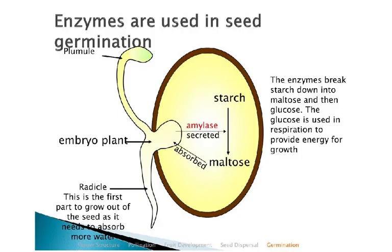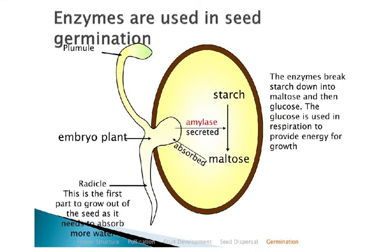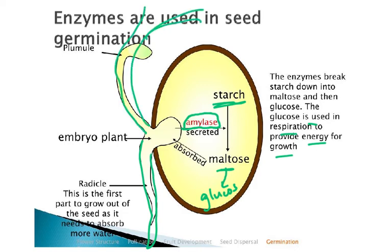Now we look at how enzymes are used in seed germination. The radicle and plumule have to grow, meaning mitosis must take place and more cells must be added. The food store is starch, and starch must be converted to maltose by the enzyme amylase, which is produced by the embryo plant. The amylase goes to the cotyledons where starch is converted to maltose, then the enzyme maltase converts it to glucose. The glucose is then respired to provide energy for growth.